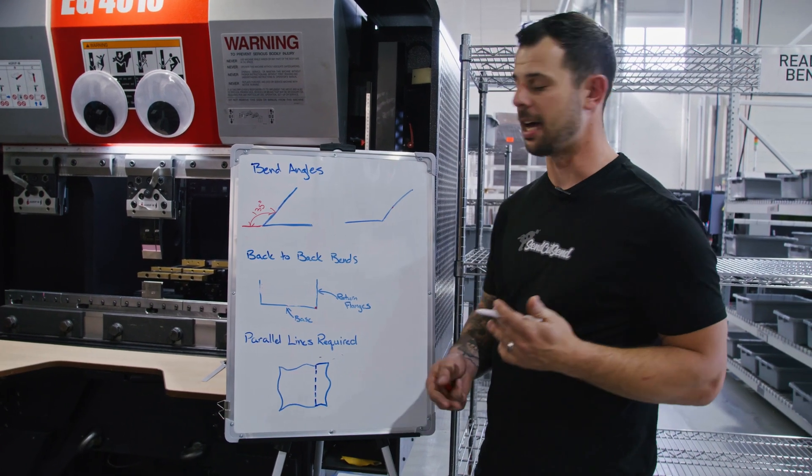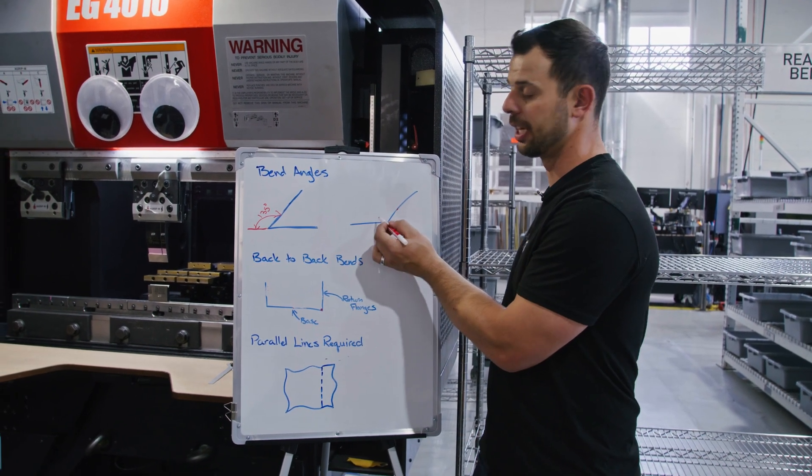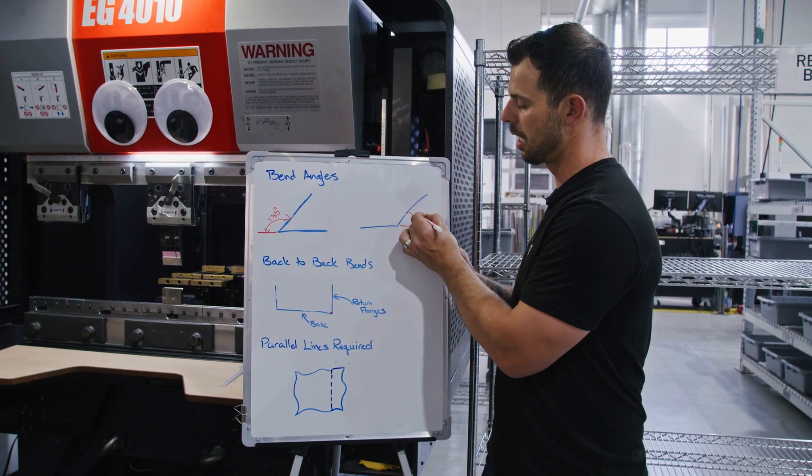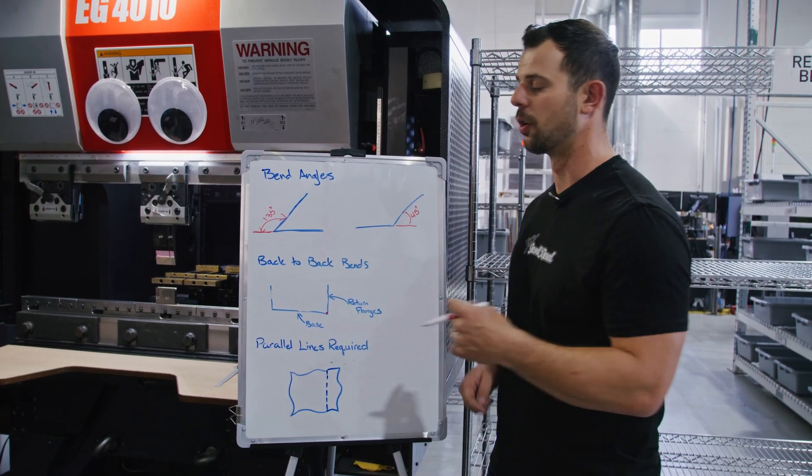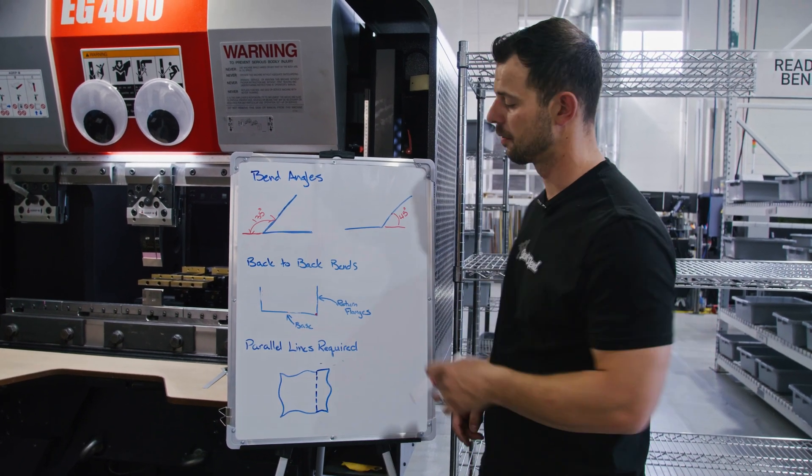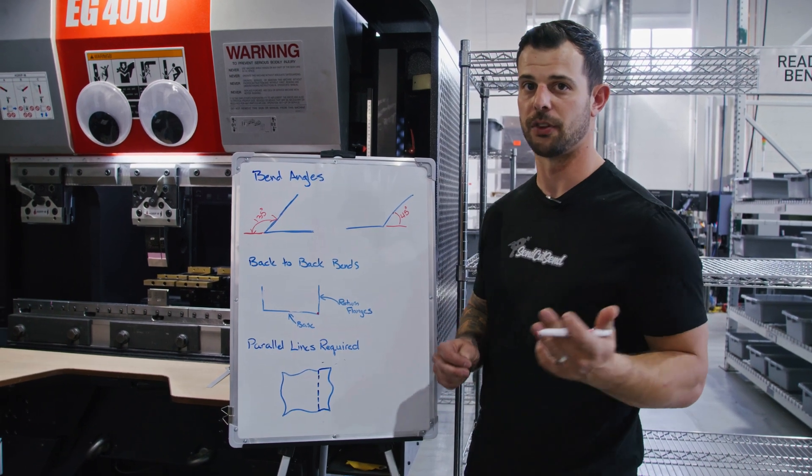Let's look at the opposite of that. If we want to have our part be an obtuse bend with 135 degree included angle, we're going to actually be measuring off the flat here at 45 degrees. So if we're going to go to the website, we want an acute angle, we're going to put in 135 degrees. If we want an obtuse angle, we would put in 45 degrees for these bends.